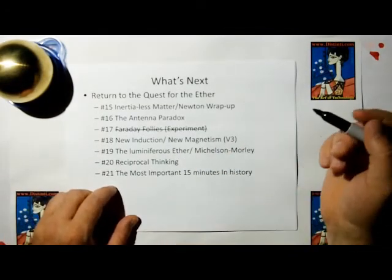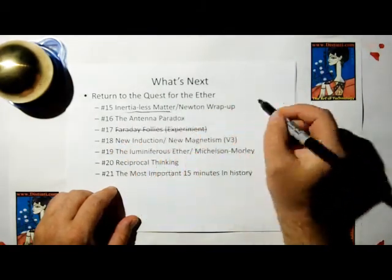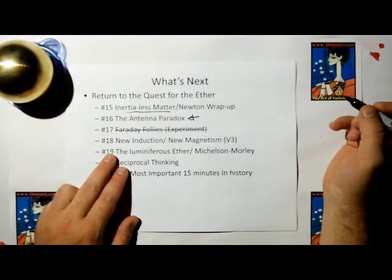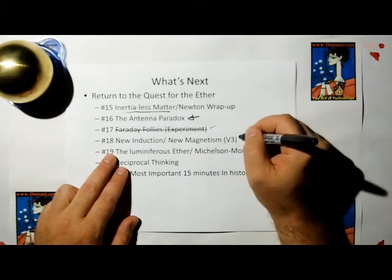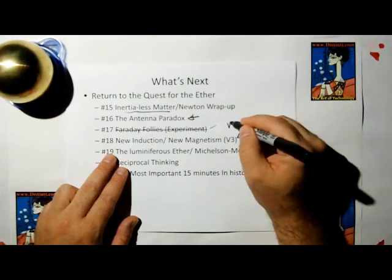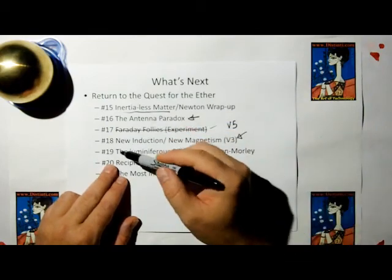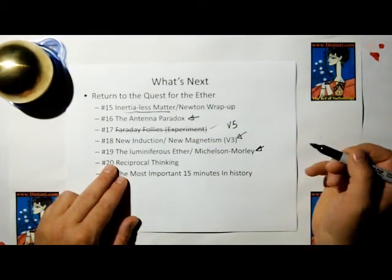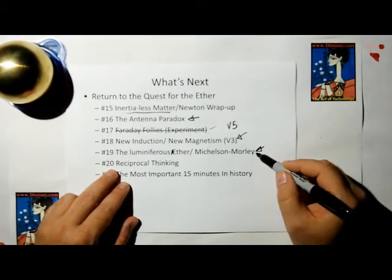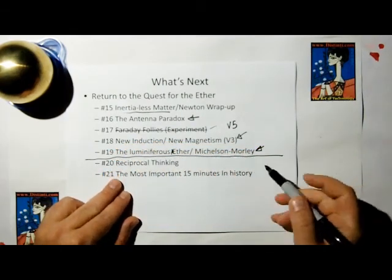So what's next? Number 15, we're going to wrap up Newton's third law by talking about inertialist matter. Then we're going to talk about the antenna paradox. I recommend that for all of my antenna engineer friends. We're skipping 17. This is an introduction to the V3 models of new induction and new magnetism. The V5 models will be disclosed at a later time. 19, we're going to have a history lesson on what the luminiferous ether was. Sometimes people put a little A there. And what the Michelson-Morley experiment was. We kind of need that to understand where we're going.